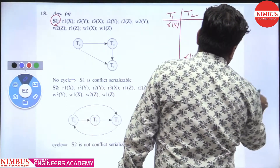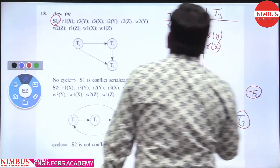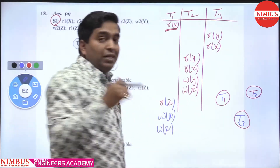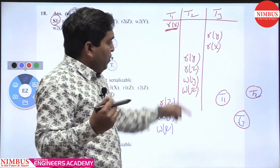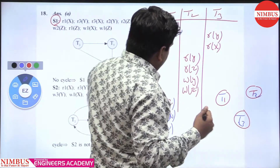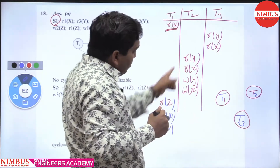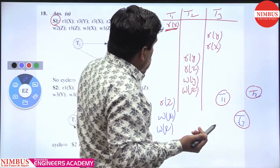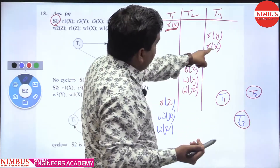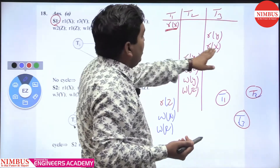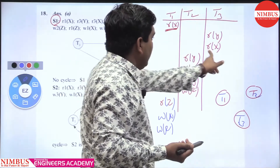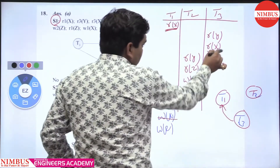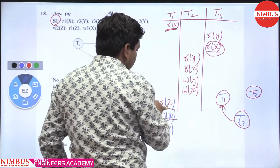Now build the precedence graph. First check for X. T1 performs read X. After that, check if T2 performs write X — no. Check T2 to T1: T2 has no read X, only write X. Then check T1 to T3: T3 reads X, then T1 writes X. So there is an edge from T3 to T1 due to this conflict.